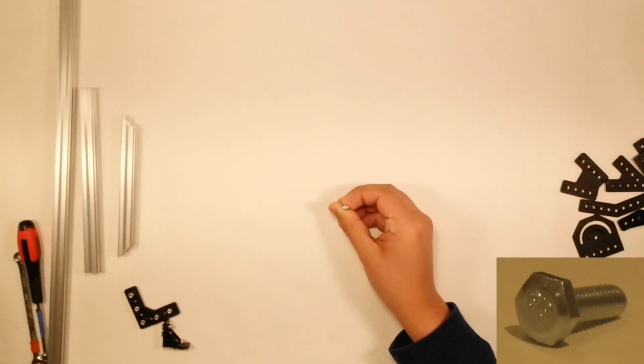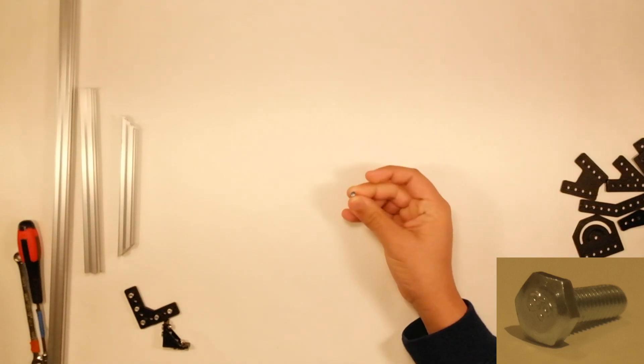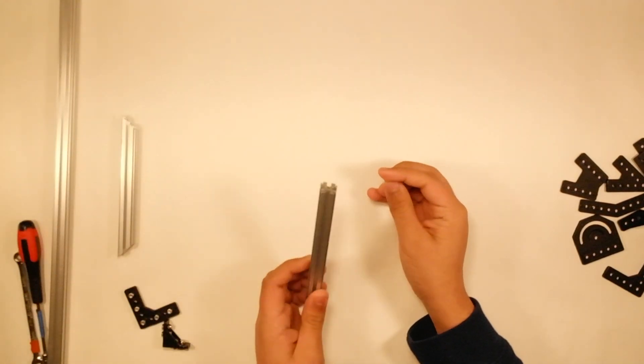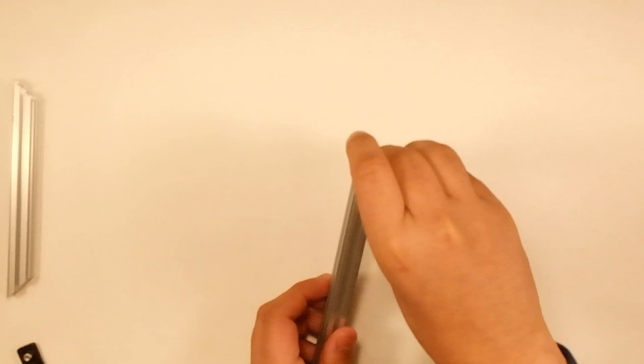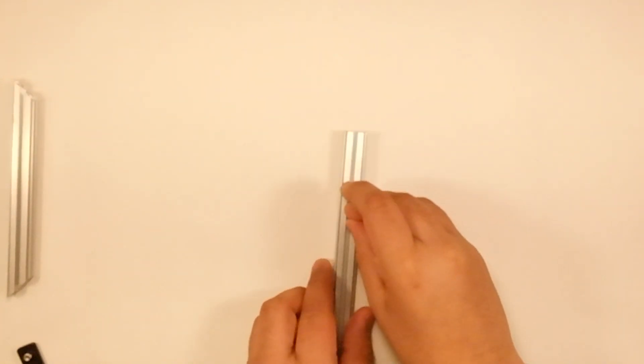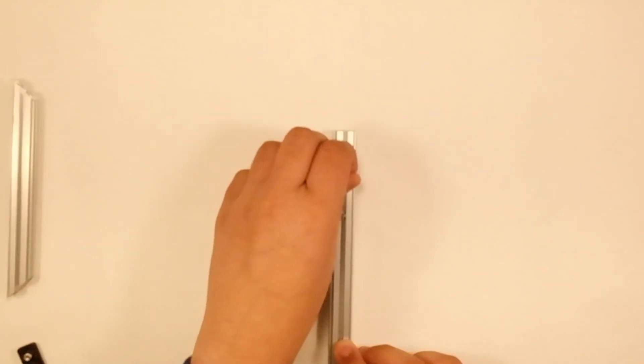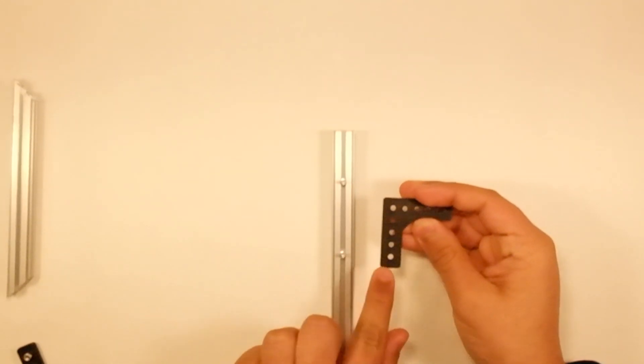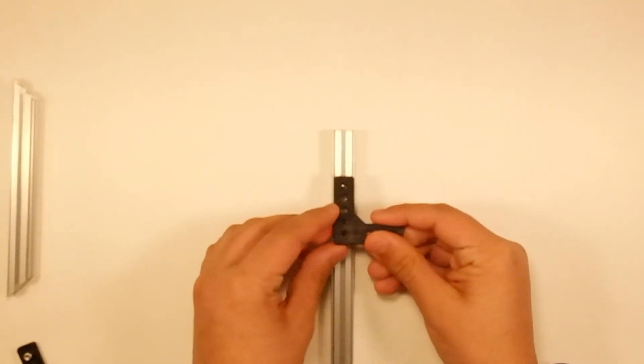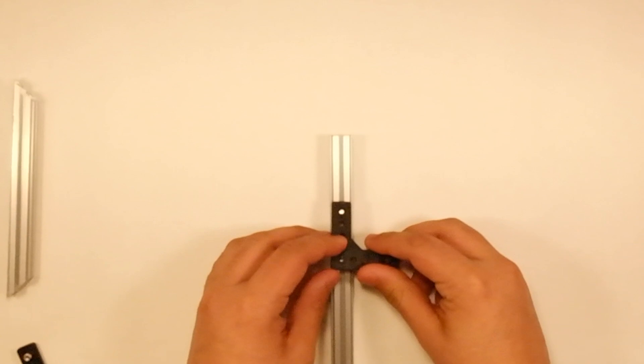We have these hex head screws, which are 8mm long, and in order to put them into the REV extrusion, you see there are slots on the REV extrusion, and we can slide them into the slots. If I want to create a 90 degree angle, I can put two of these screws in, and then I can take my 90 degree bracket, and I can adjust the screw position in order to get them into the right place.